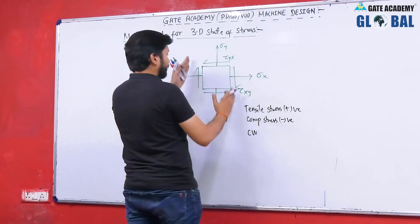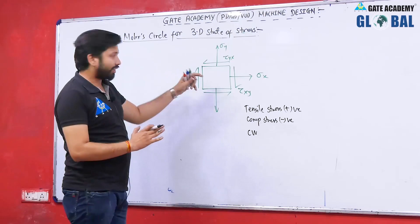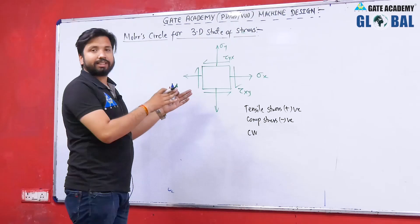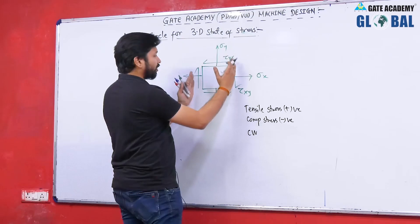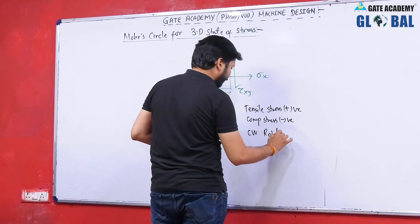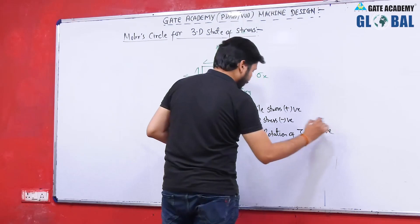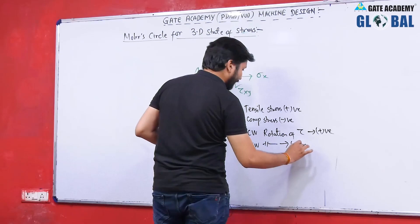Also, if the shear stresses are causing an anti-clockwise rotation of the element, they are taken as negative. If they are causing a clockwise rotation of the element, they are taken as positive. So tau causing clockwise rotation is positive, and tau causing anti-clockwise rotation is taken as negative.